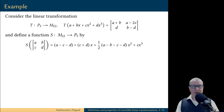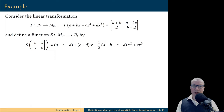Let's look at an example. We have a linear transformation t that goes from the vector space of polynomials of degree at most 3 into the vector space of matrices of size 2 by 2. Let me do a magic trick and simply define a function s that goes in the opposite direction.